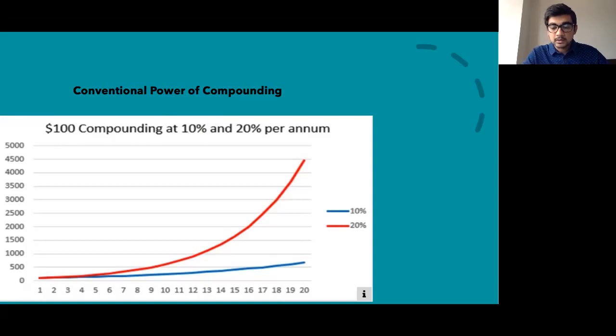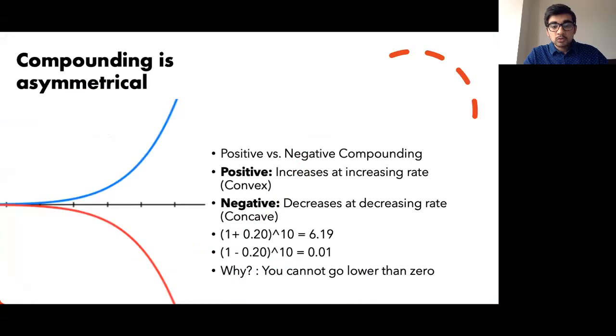So the point that I'm trying to make here is that compounding is a beautiful concept because when compounding is positive, it increases at an increasing rate, but when compounding is negative, it decreases at a decreasing rate. Now I've thrown a lot of jargon already, but let me simplify it for you.